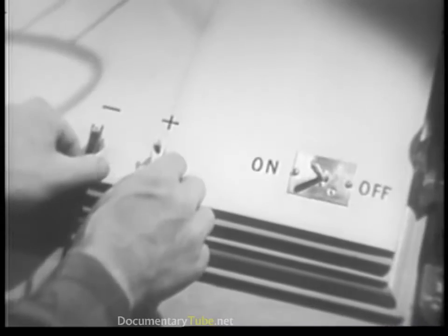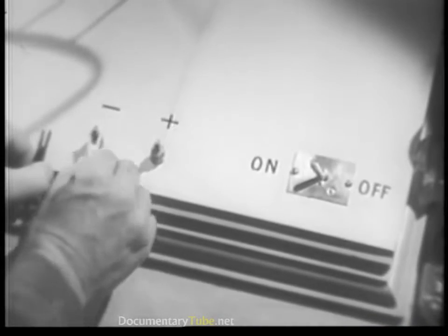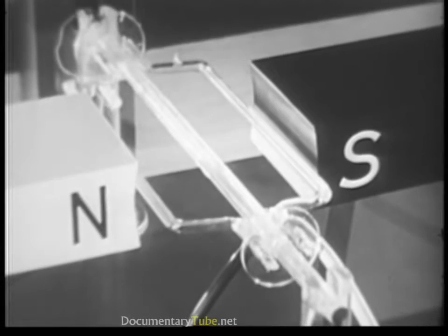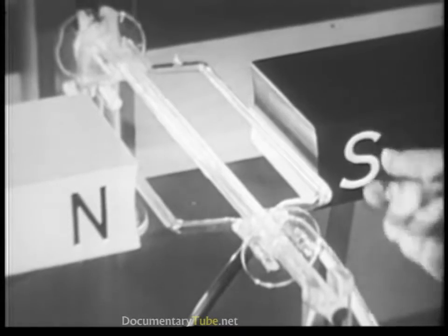So if we change the direction of the current, the poles automatically change positions. This is going to be the north pole of the loop as soon as current begins to flow.